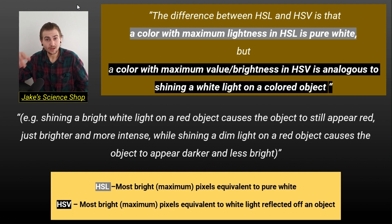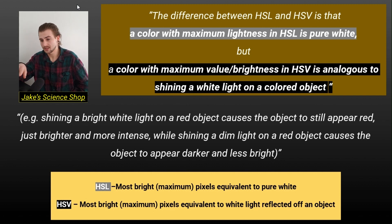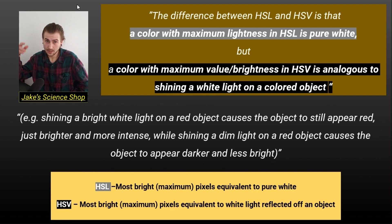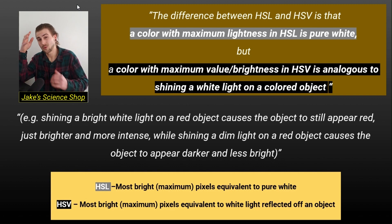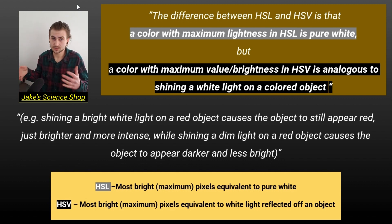To summarize: in the HSL color model, the maximum brightness pixel value is equivalent to pure white. In HSB, the maximum brightness pixel value is equivalent to the white light reflected from objects in our real world.